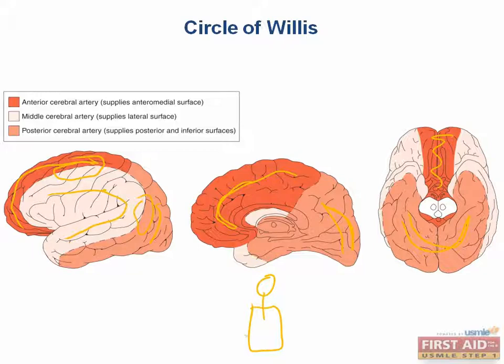The MCA-PCA junction mediates the occipital lobe, which we have an example of here. Thus, infarcts here can produce visual agnosias and cortical blindness. Visual agnosia refers to the brain's inability to recognize common objects, even though the visual stimulus is normally received.